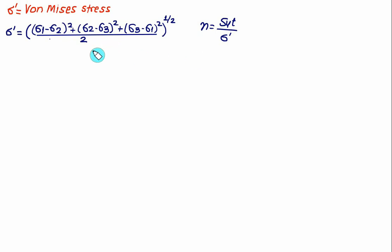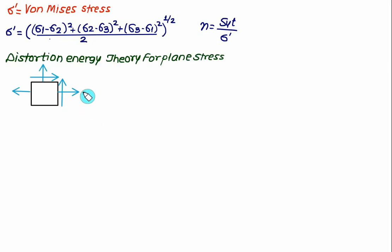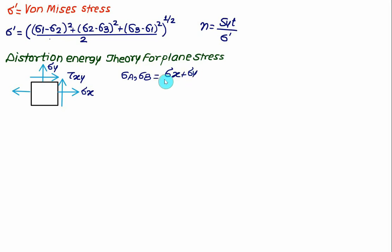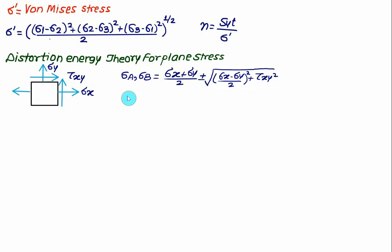Applying the distortion energy theory for a two-dimensional plane stress condition: consider a plane state of stress where sigma_x is the stress along the x-axis, tau_xy is the shear stress, and sigma_y is the stress along the y-direction. Using sigma_x, sigma_y, and tau_xy, we can calculate two principal stresses sigma_a and sigma_b. Their values are: sigma_x plus sigma_y divided by 2, plus or minus the square root of [(sigma_x - sigma_y)/2]² + tau_xy².